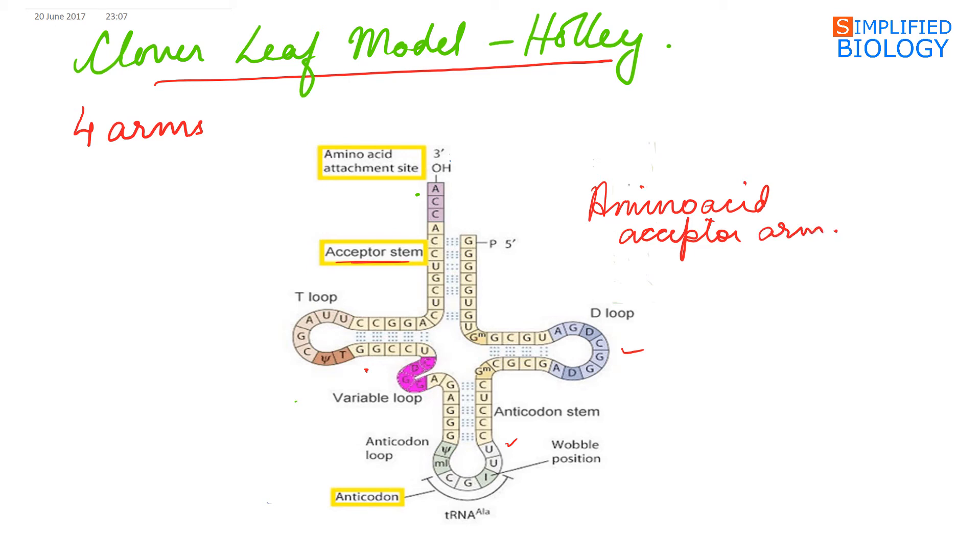It always has a CCA sequence—cytosine, cytosine, and adenine sequence—at the 3' end, where the amino acid is attached, and either of the two purines at the 5' end. An ester bond is formed between the hydroxyl group of the terminal adenine and the carboxyl group of the amino acid to form aminoacyl tRNA during protein synthesis.